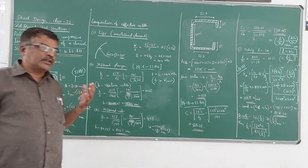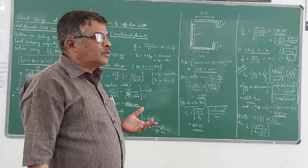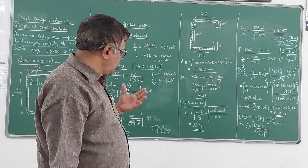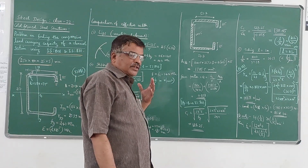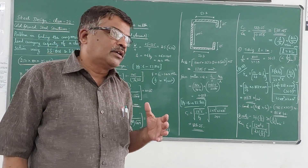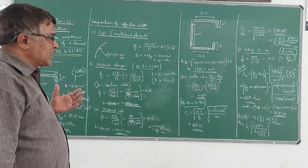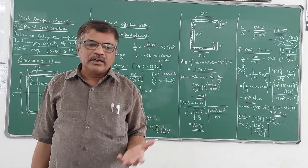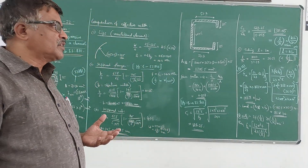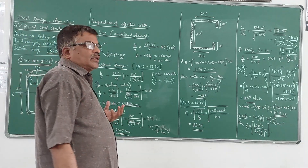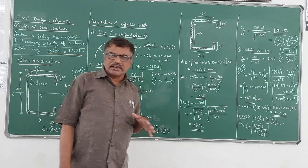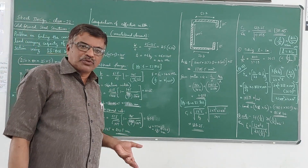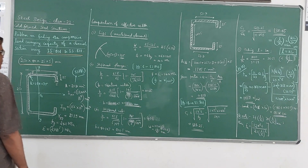The effective length of the column has not been given. We will find out the general procedure to find the load carrying capacity, and later we will see how the compressive load value changes for different effective lengths. We already know that as the effective length of the column increases, it becomes a long column and the load carrying capacity will reduce.